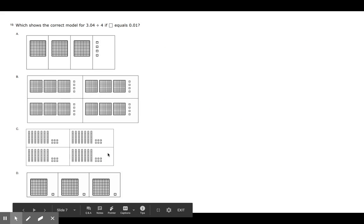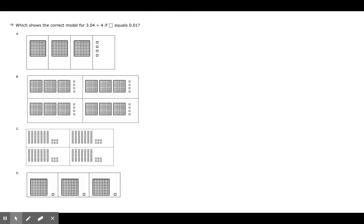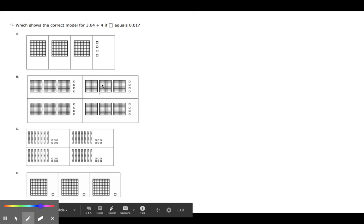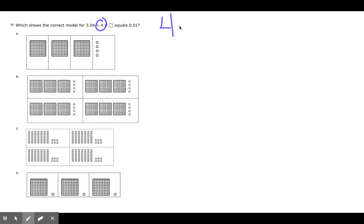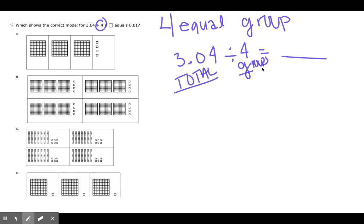Number 19. Which shows the correct model for 3.04 divided by 4? Man, we struggled on this one. We're dividing by four. That means four equal groups. Right. We're doing four equal groups. Now, if I do this equation like this, 3.04 divided by four equals blank, this is my total. This is my G for groups. And my answer is going to be how many of those are in each group. So if I'm looking for four equal groups, boys and girls, which of these answer choices does not have four equal groups? This one does not, and this one does not. But B and C do have four equal groups. So go ahead and choose what you think the right answer is, and I'll wait for you patiently.